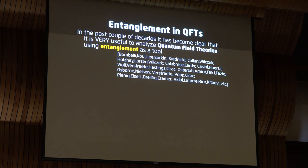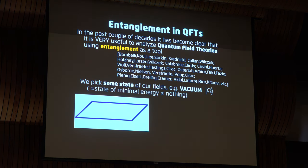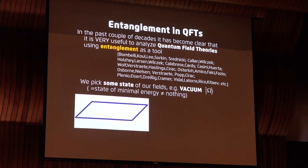In the past couple of decades it has become clear that it is very useful to analyze quantum field theories from the perspective of computing entanglement entropy. We need the two ingredients I mentioned before: first, we need to choose a state of the quantum fields — the easiest thing is just to choose the vacuum. When one first starts exploring entanglement in the vacuum, one might be confused, because it's easy to picture entanglement between two spins or two particles. But from a field theory perspective, the vacuum is not equivalent to saying there's nothing there — the fields are in the ground state, so they're doing something, and it's a valid question to ask how much entanglement there is in that state.